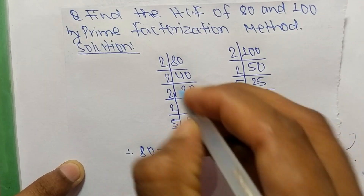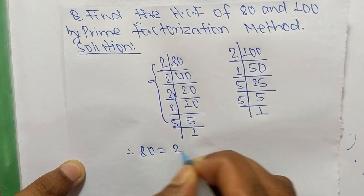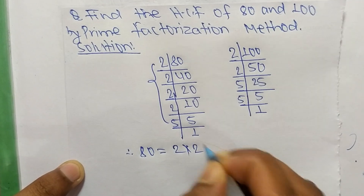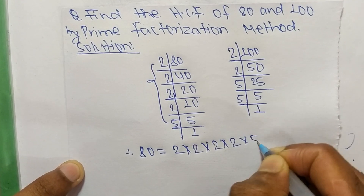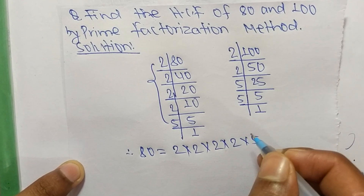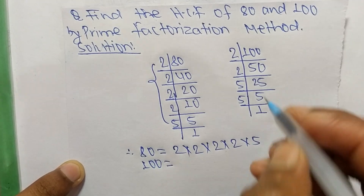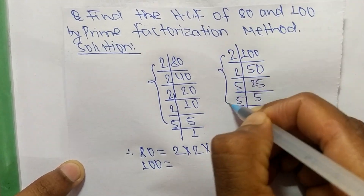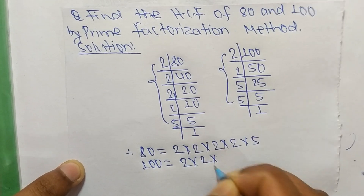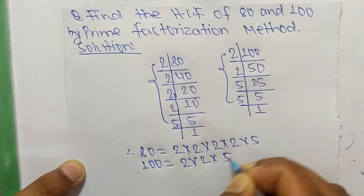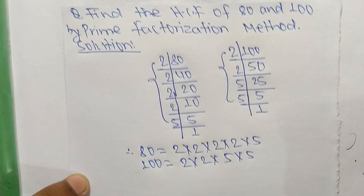80 is equal to 2 times 2 times 2 times 2 times 5. Likewise, 100 is equal to 2 times 2 times 5 times 5.